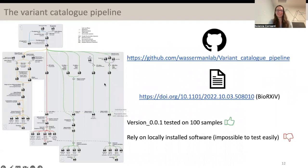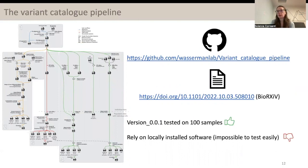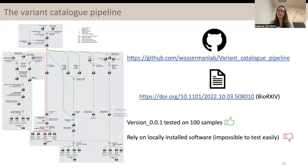That was just an overview of the pipeline; this is the actual complete pipeline. It's available on the Wasserman Lab GitHub, and it's described in more detail in this preprint. It was tested on 100 samples and it works. The details of the number of CPU hours, as well as the number of variants that were filtered out by the quality control steps, are available within the preprint. However, this version still relies on locally installed software, and that is an issue for two reasons: first, it's really hard for other projects to use, and second, it's impossible to test easily, like we are used to testing other NF-core and Nextflow pipelines with just one command line.